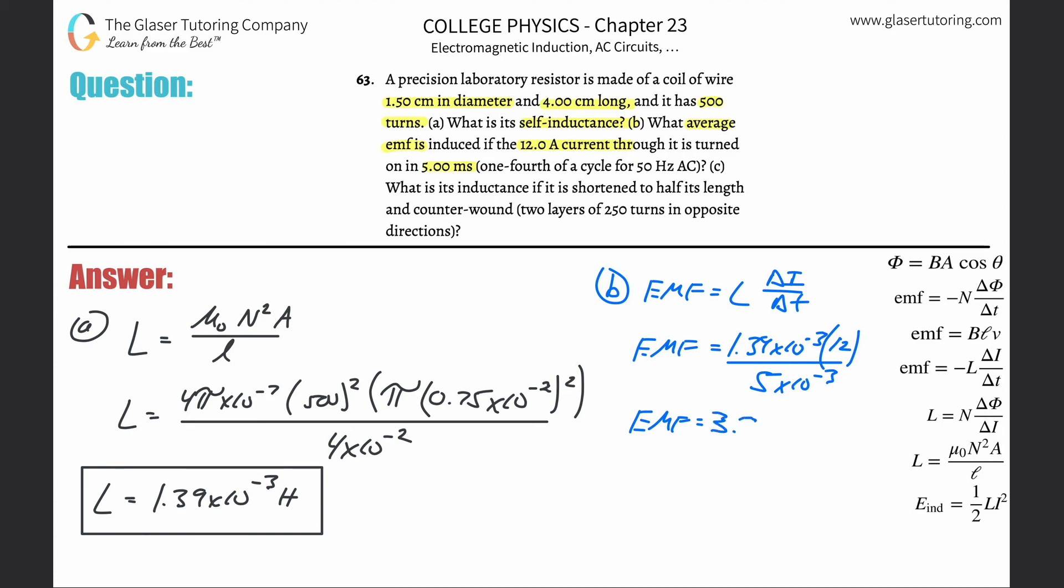3.33 volts. The negative sign just implies direction; we're calculating magnitude. Part C: What is its inductance if it's shortened to half its length and counter-wound, meaning two layers of 250 turns in opposite directions?